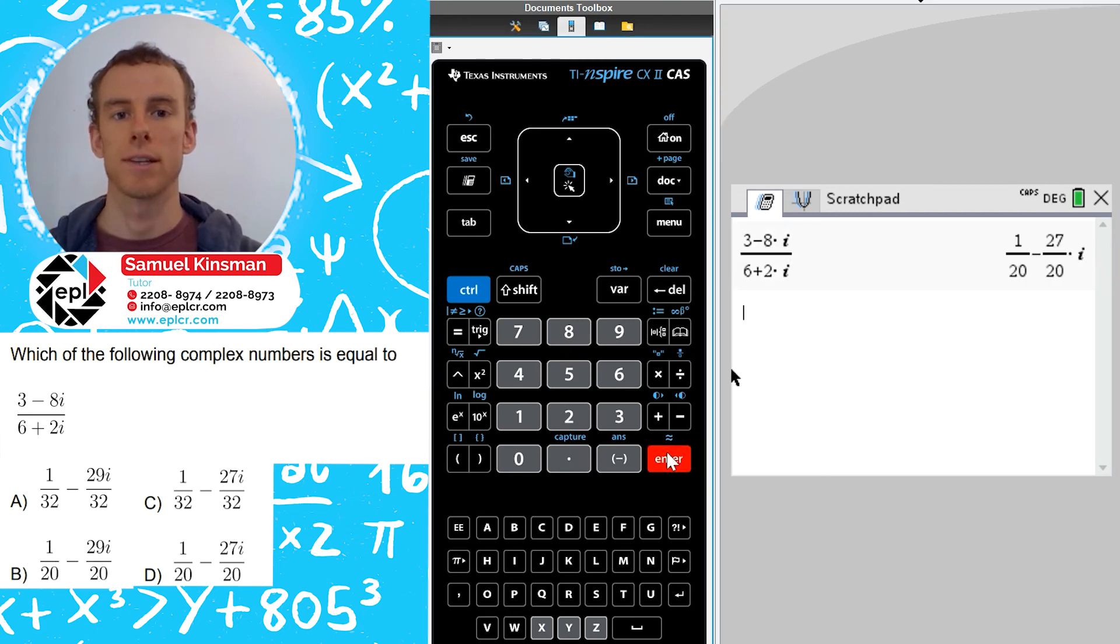So now we just press enter. And there's our answer. We've got 1 over 20 minus 27 over 20i. And that is answer choice D.